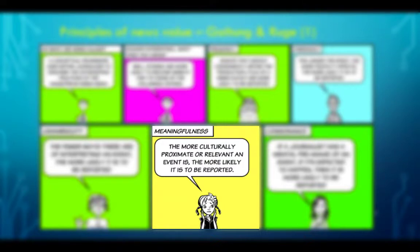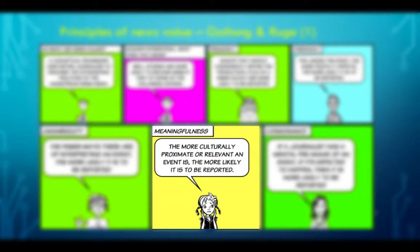Meaningfulness. The more culturally proximate or relevant an event is, the more likely it is to be reported. Here in Malta, for example, if we cover what's happening in Malta, this will be given much more prominence than something happening on the other side of the world. However, if the other side of the world is Australia, Canada or the United States — where there are sizable Maltese migrant communities — then culturally they become proximate to Malta, and therefore it is more likely that those events are covered.